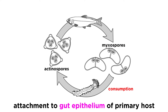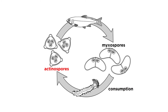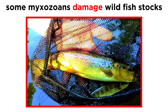The mixospores are then consumed by the definitive host, where they attach to the lining of the gut epithelium using their nematocysts or polar filaments, and multiply. They eventually produce sexual stages and release spiny actinospores that exit the definitive host, usually by the anus, and float in the water column. If the actinospores come into contact with skin or gills of a suitable intermediate host, they penetrate into the epithelium to cause a new infection.